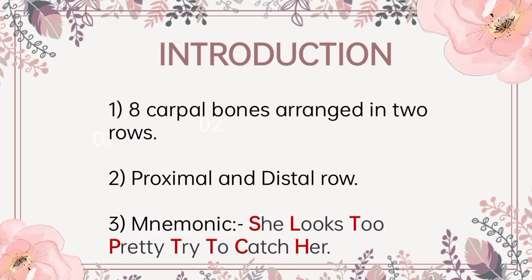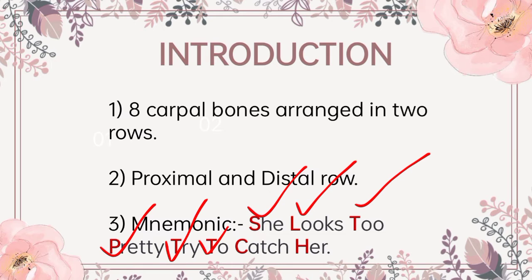We have 8 carpal bones arranged in 2 rows: first is proximal row and a distal row. Proximal means towards the body and distal which is away from the body. The mnemonic for the carpal bones is 'She Looks Too Pretty, Try To Catch Her,' for which S is scaphoid, L is lunate, triquetral, pisiform, trapezium, trapezoid, capitate and hamate.